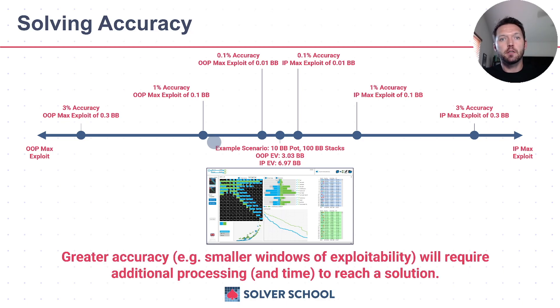There's going to be some trade-offs. Why would you choose a less accurate version as opposed to a more accurate version? Greater accuracy or these smaller windows of exploitability are going to require additional processing power. It's also going to mean additional time to reach a solution.